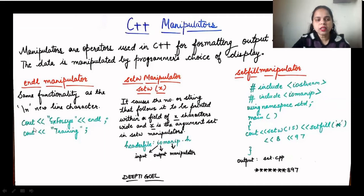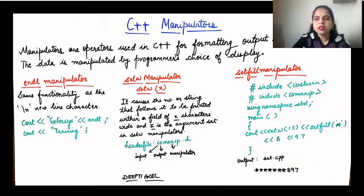endl plays the same role and has the same functionality as the slash n newline character. If you write cout with the insertion operator for X followed by endl, then for the next cout writing 'training', when you execute this, X and 'training' would be written in two separate lines. If you don't put endl or slash n, then both would be written in the same line. This is the endl manipulator — you can manipulate the output according to your choice.